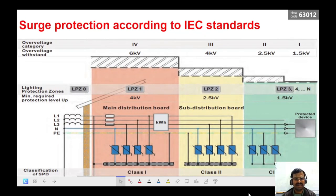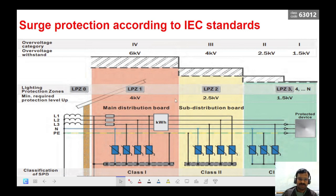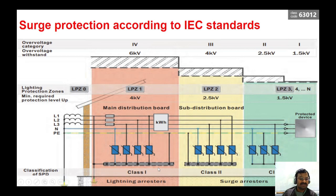What are the different classifications given by the IEC? IEC classifies the zones as main distribution board, sub-distribution board, and near to the load. Based on this, we are going to have the minimum required protection voltage levels of 4 kV, 2.5 kV, and 1.5 kV. We also classify these areas as class 1, class 2, and class 3. Class 1 zone is classified as a lightning arrestor, and class 2 and class 3 areas are classified as surge arrestors.